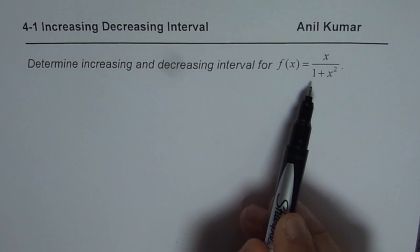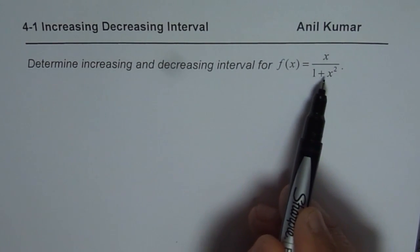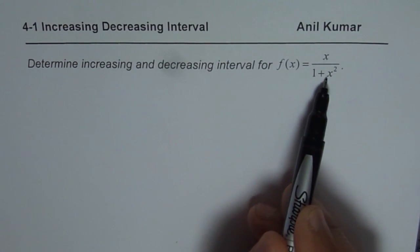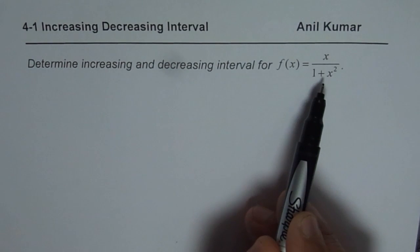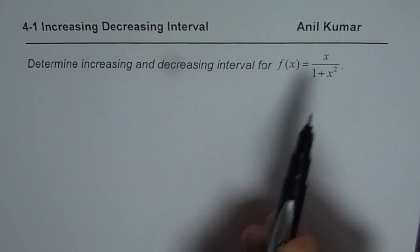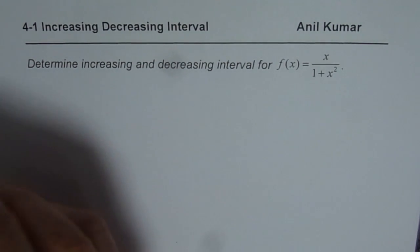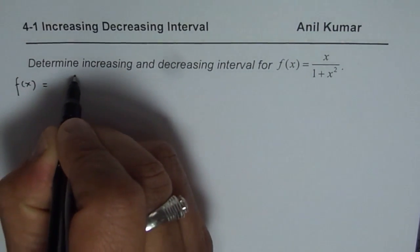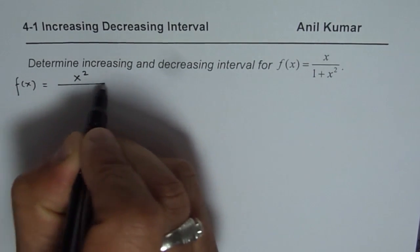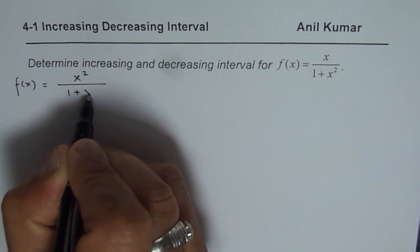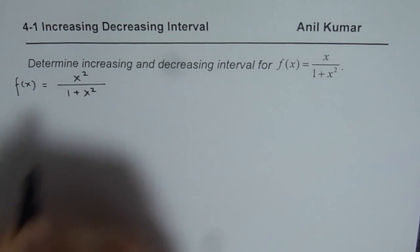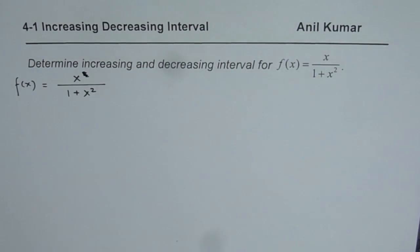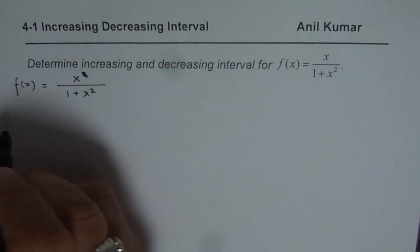You should note that this function is continuous in its domain. The denominator is never 0, so that is a very important thing to notice. To find increasing and decreasing intervals, you need to find the first derivative, which will give us the critical numbers. Analyzing the critical numbers, we can figure out the intervals for increase and decrease.